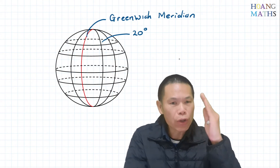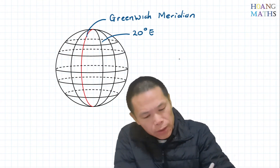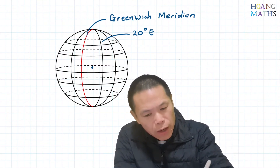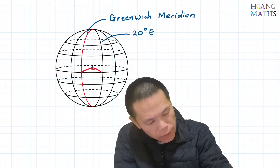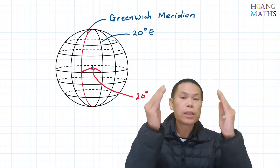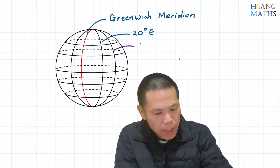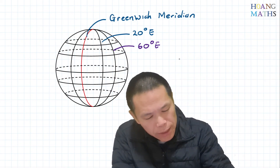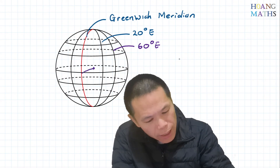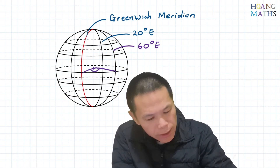Let's say this longitude here is 20 degrees — this means it's 20 degrees away from the Greenwich meridian, and because it's on the right hand side, we say 20 degrees east. If this is the center of the earth, the angle measured from the Greenwich meridian to this line is 20 degrees — that's the angular distance. Now let's make this longitude 60 degrees, so it's 60 degrees east of the meridian. The angular distance from the Greenwich meridian to this line, measured at the center of the earth, is 60 degrees.